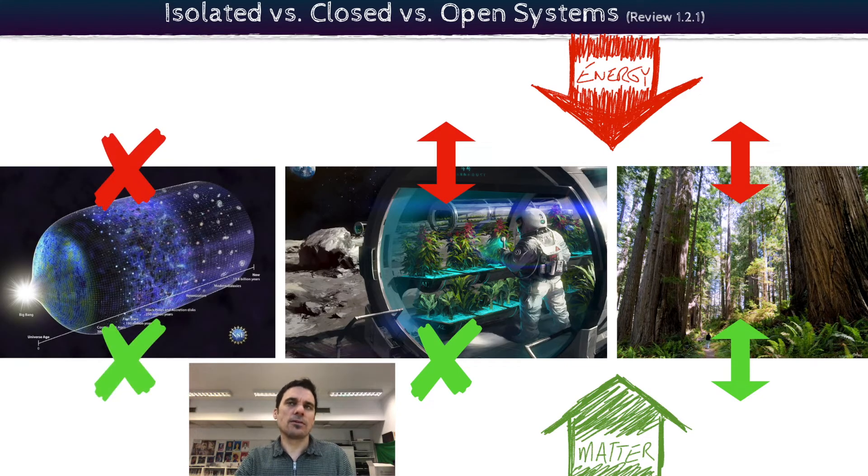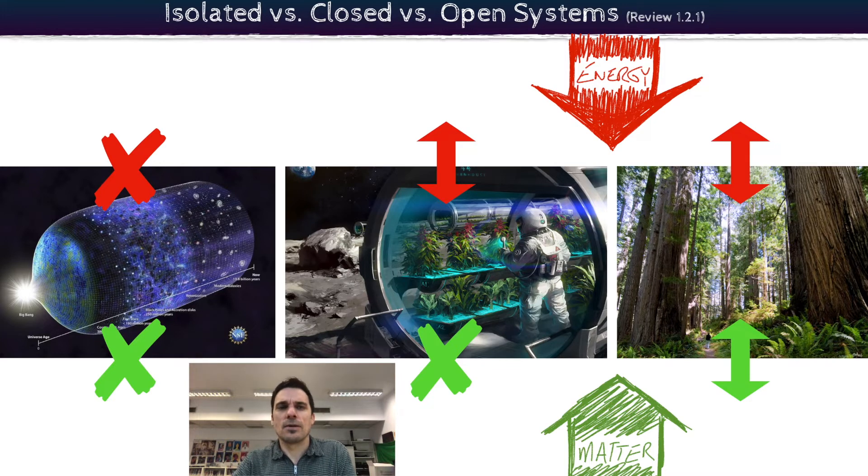An isolated system is a bit of a theoretical concept. Really the only isolated system that you could truly talk about is the universe because we don't necessarily have an understanding yet of the energy entering the universe or escaping the universe. We are encapsulated in all the known energy from the Big Bang and that's a whole different story to go into. So we'll leave that as it is when we talk about isolated systems. That's really the one we have to talk about. Not many others that we can think about on this planet.